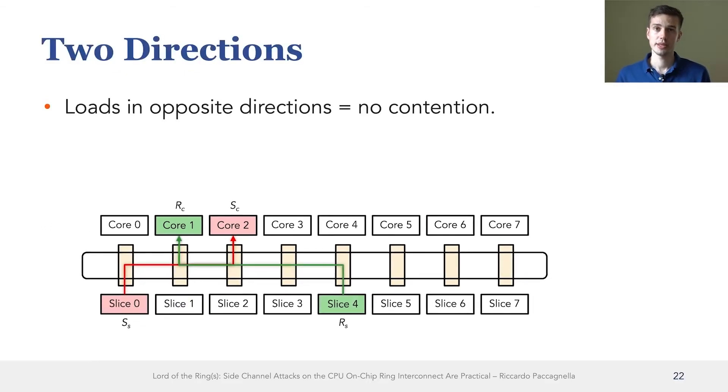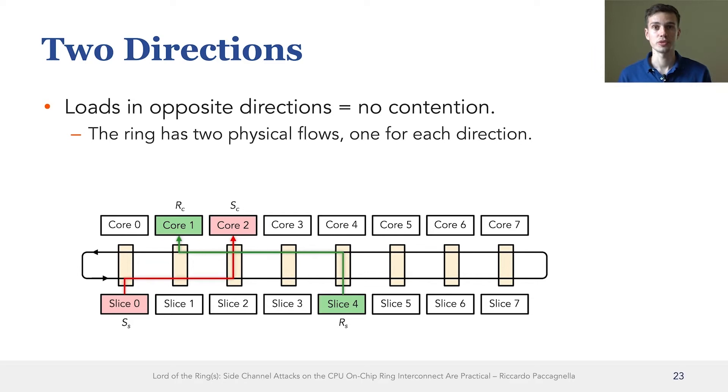The third observation that we made is that when the sender and the receiver are loading in different directions, then we never see contention. And the reason why this is the case is that the ring interconnect is actually a ring and it has two different flows. One that goes from right to left and one that goes from left to right. And when the sender and the receiver are loading in different directions, they simply use different physical flows. A consequence of this observation is that ring stops can inject and receive packets from both directions simultaneously.